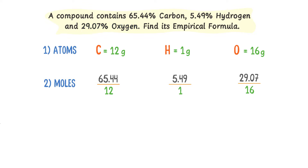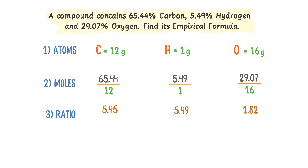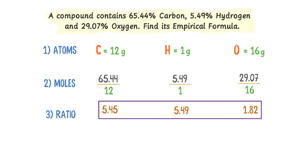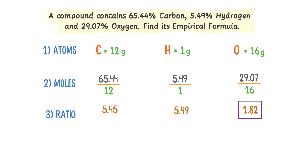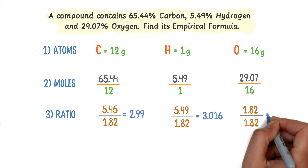After calculation, I get 5.45 moles of carbon and 5.49 moles of hydrogen. Thirdly, I calculate the simplest whole number ratio by dividing all three numbers by the smallest number, which is 1.82. After calculation, I get 2.99, 3.016, and 1.